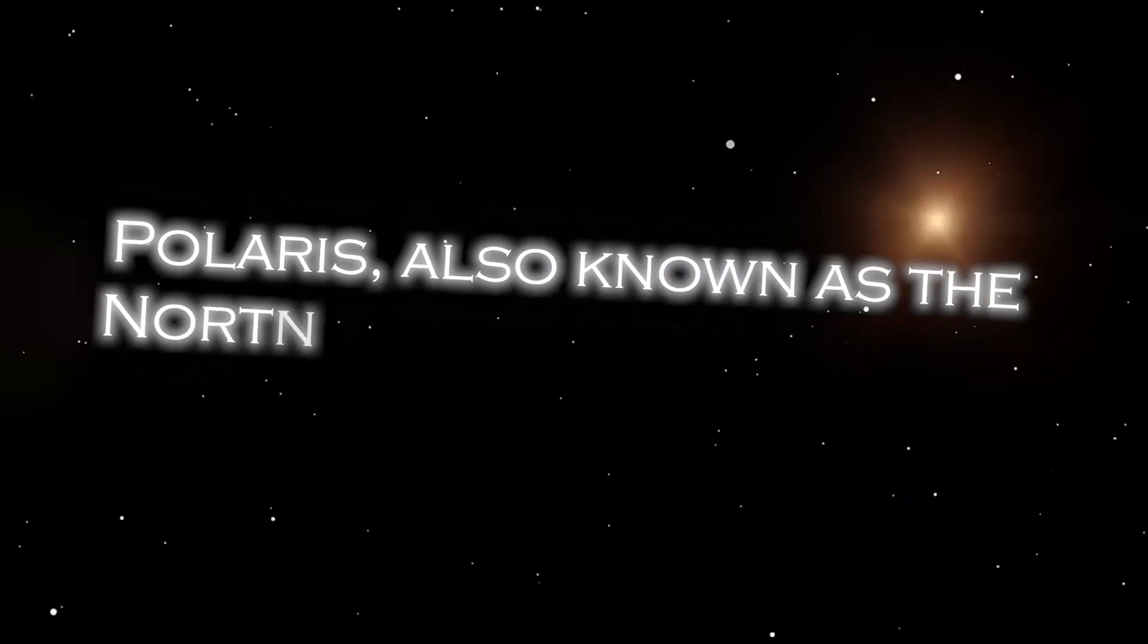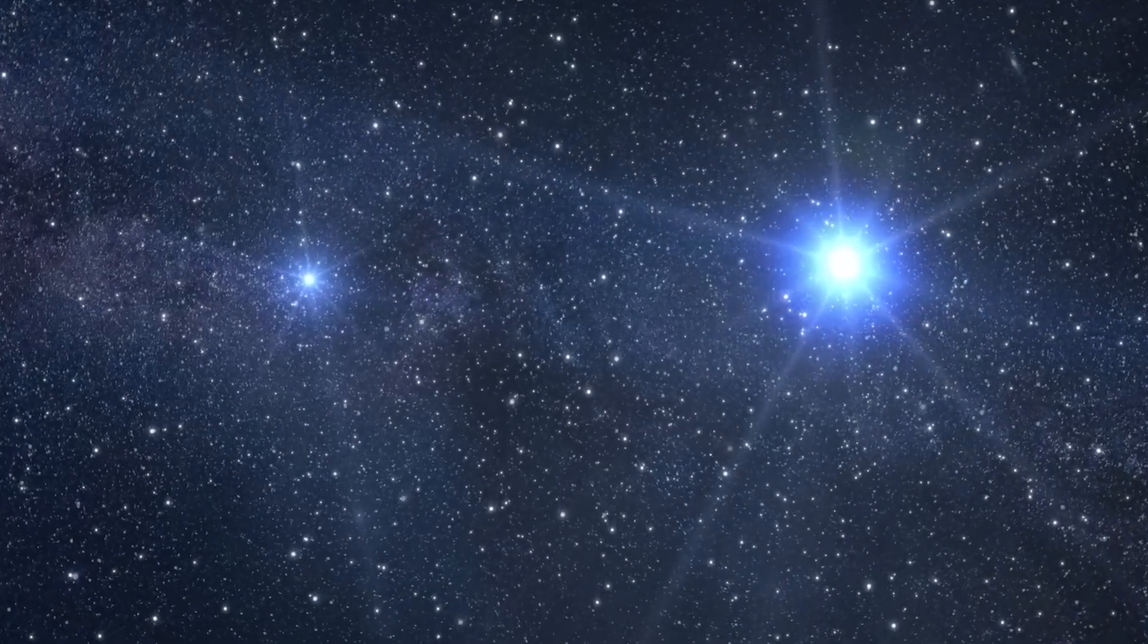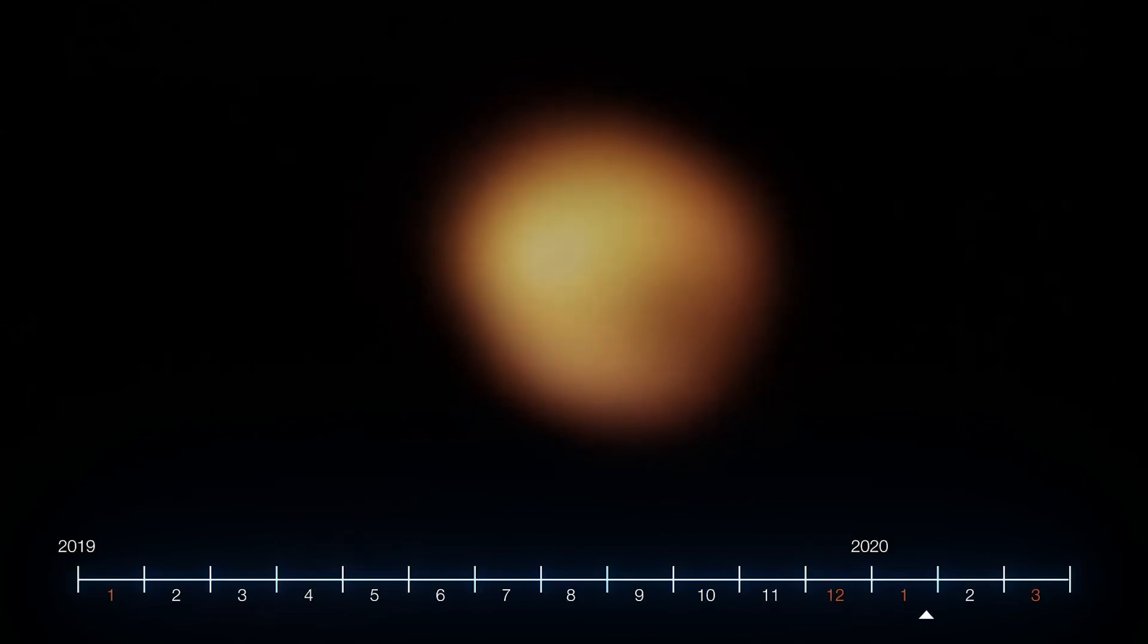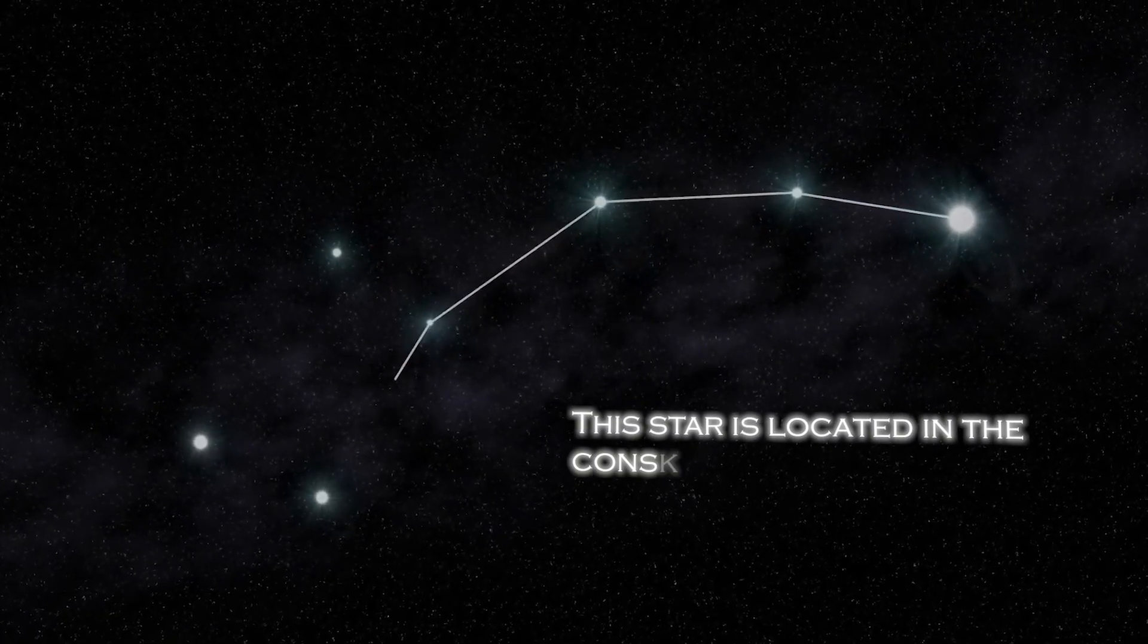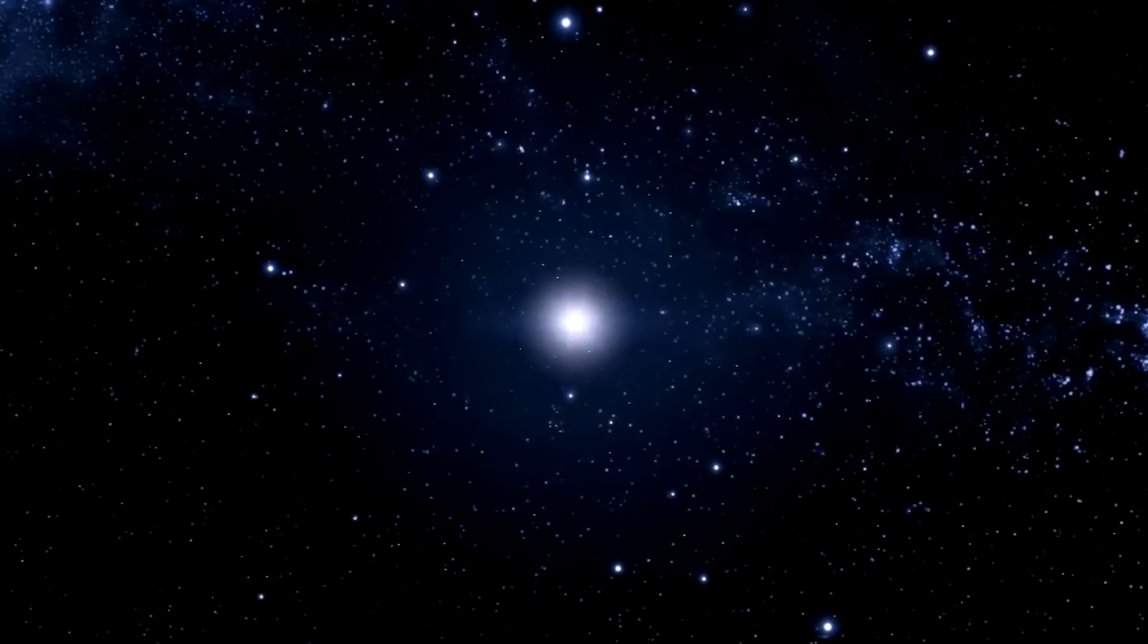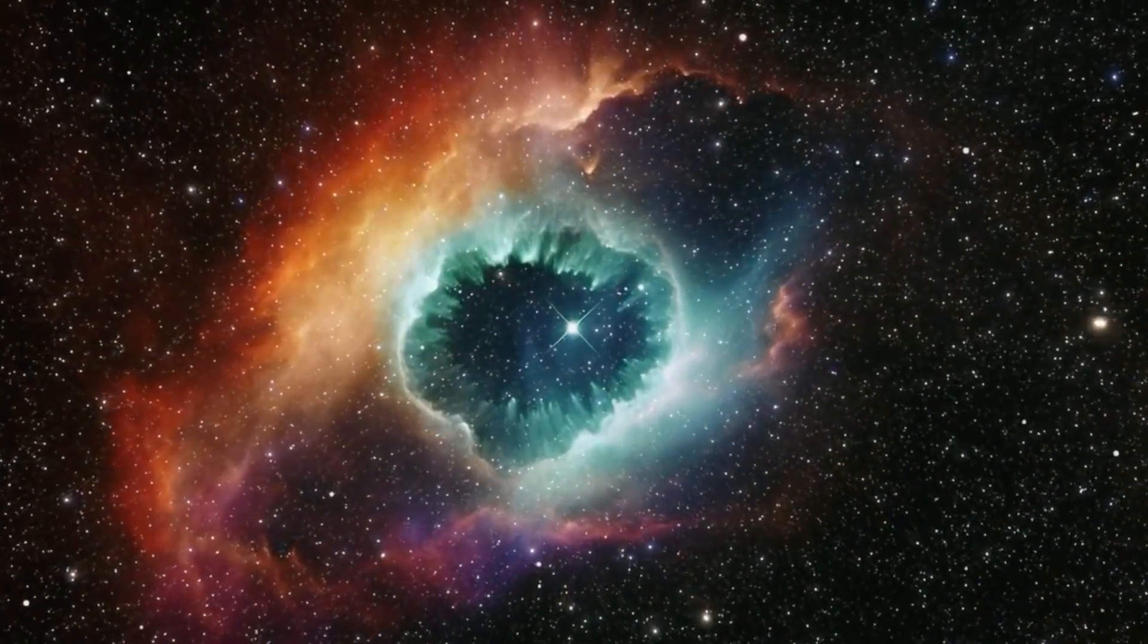Polaris, also known as the North Star, occupies a special position in the sky because of its proximity to the celestial North Pole. It is almost directly over the Earth's North Pole, which gives the illusion that it remains static in the northern sky. The star is located in the constellation Ursa Minor. Polaris is a star of moderate brightness that stands out as a yellow-white supergiant of considerable dimension compared to our Sun.